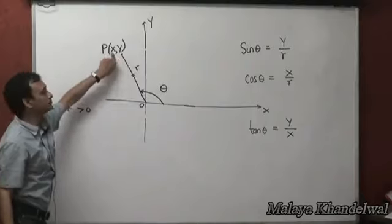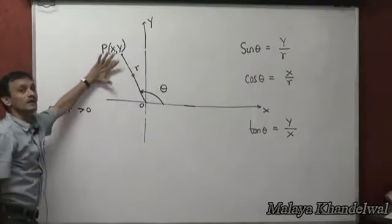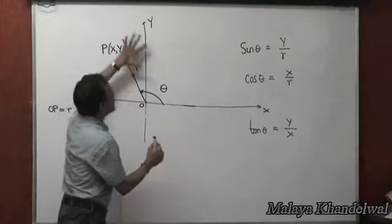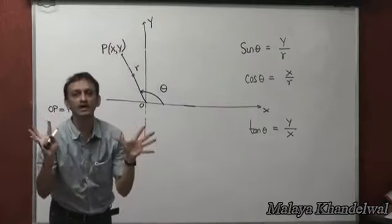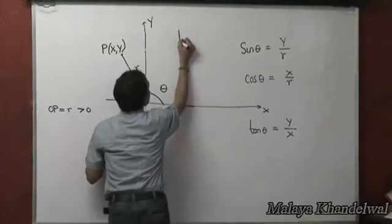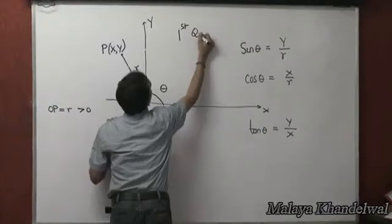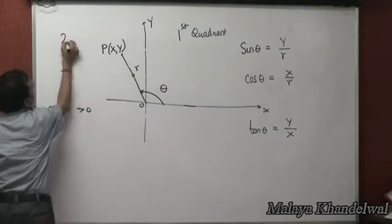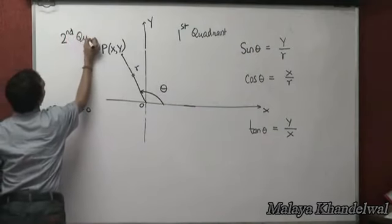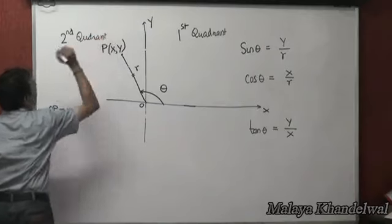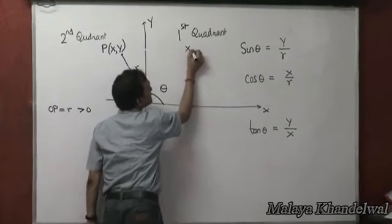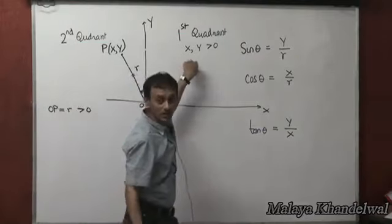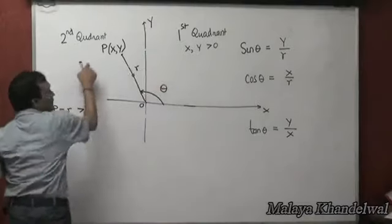x and y are algebraic — based on where point P lies, x and y would have their own signs. The xy plane is categorized into four quadrants. In the first quadrant, both x and y are positive. In the second quadrant, x is less than 0 and y is greater than 0.